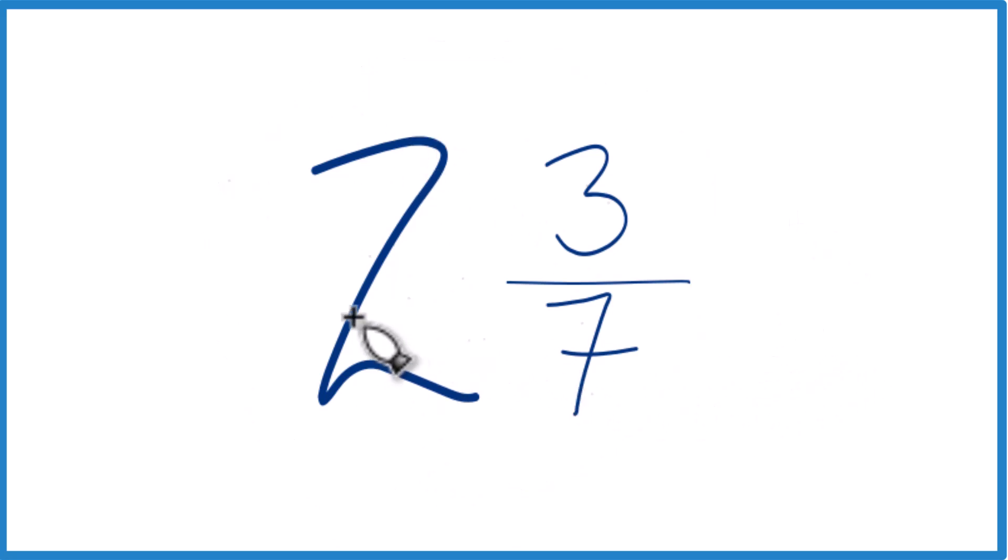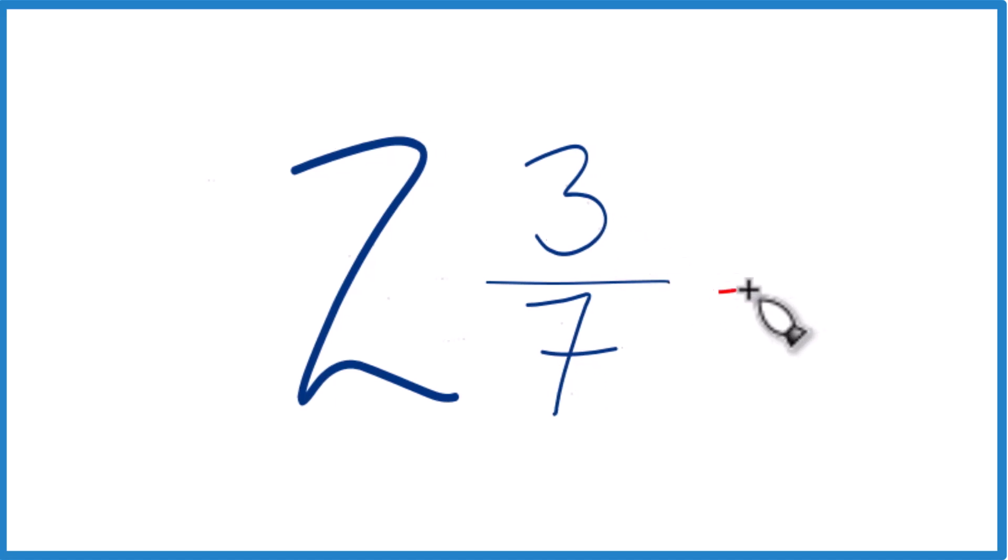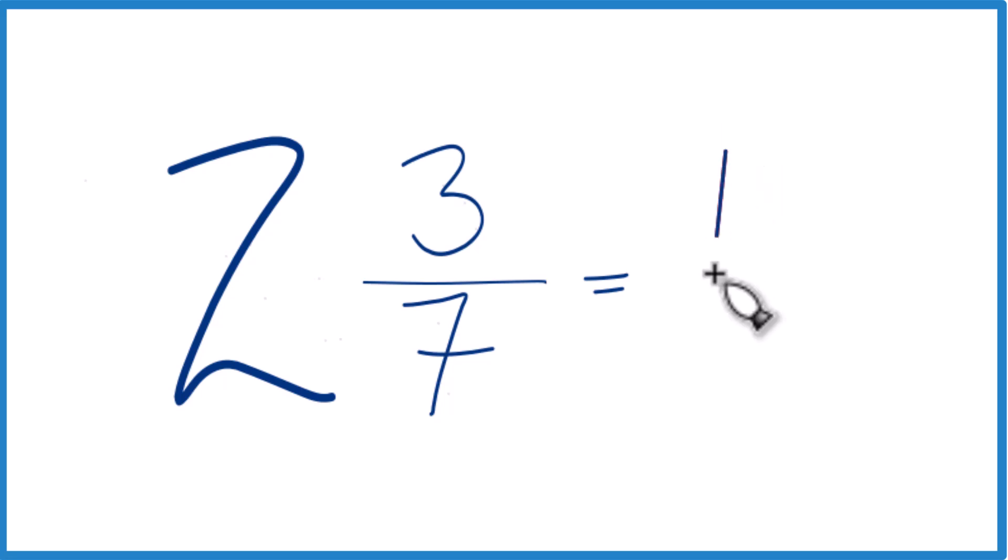You take the whole number, 2 times 7, that's 14. 14 plus 3, 14 plus 3 is 17.